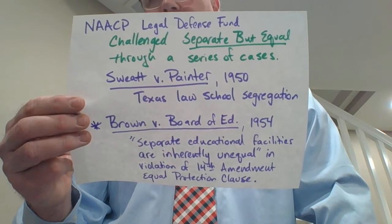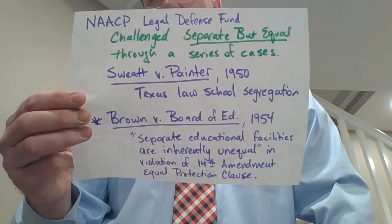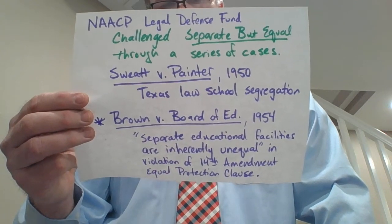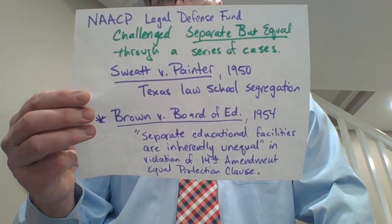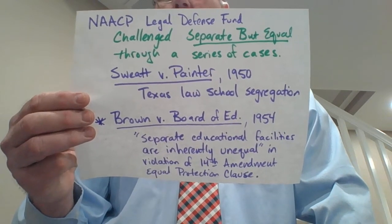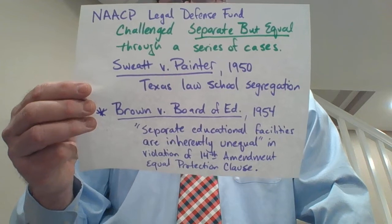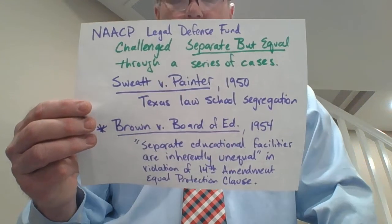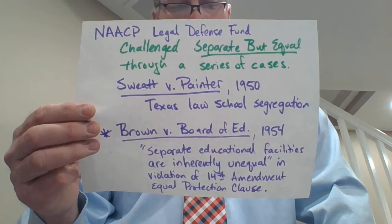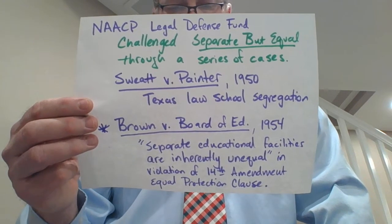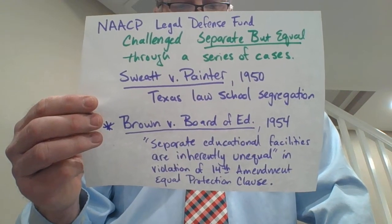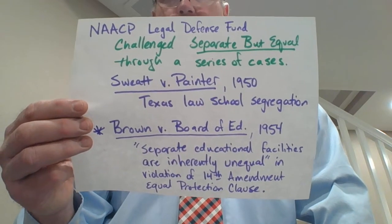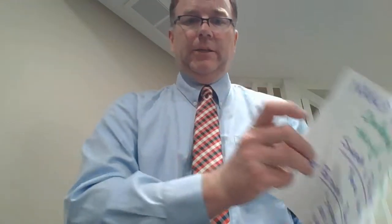Once they established the idea that the qualitative experience could be different, when Brown v. Board of Education reached the court in 1954, the court was much more willing and ready to accept the argument. Justice Warren's decision stated that 'separate educational facilities are inherently unequal,' finding this a violation of the 14th Amendment's equal protection language. They struck down the doctrine of separate but equal, at least in the educational context.